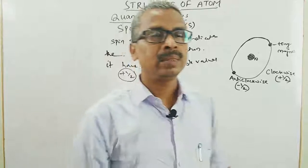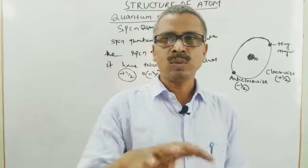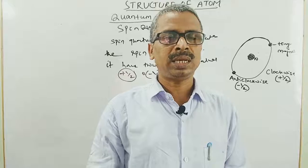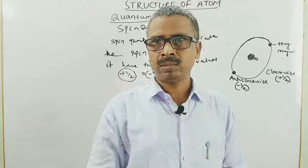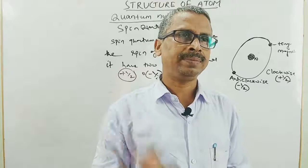Samajh kya? The electron can move in an orbital either clockwise or anti-clockwise. Yanni spin quantum number have two values: one is plus half and minus half.